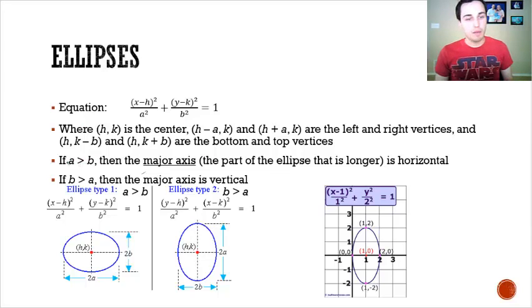A little bit of vocabulary here. Depending on which one of these is bigger, the a or the b, that'll give us a major axis for the ellipse, and the major axis is just the part of the ellipse that's longer than the other part. And so if a is greater than b, well, a is tied to the x part of this equation, so that means that in the x direction, the x direction is the major axis. It's stretched more on the x axis, more horizontal.